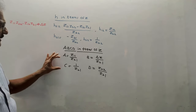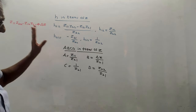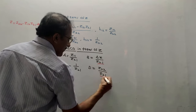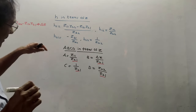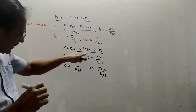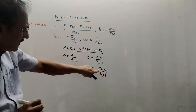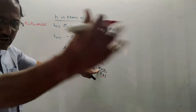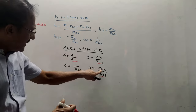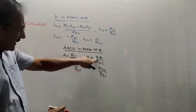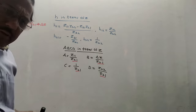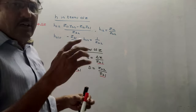For ABCD parameters in terms of Z parameters, every denominator term is Z21. For A, the numerator is Z11; for D, it is Z22 — since Z11 is first and Z22 is last, matching A first and D last of ABCD. For B, it is delta Z; for C, it is 1. So if you calculate Z parameters, you can obtain ABCD parameters directly from these formulae.